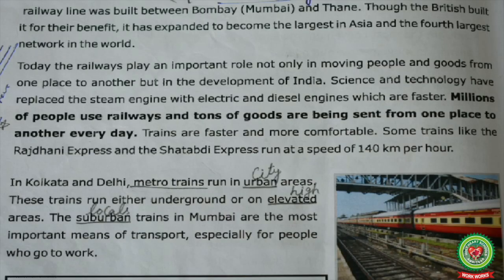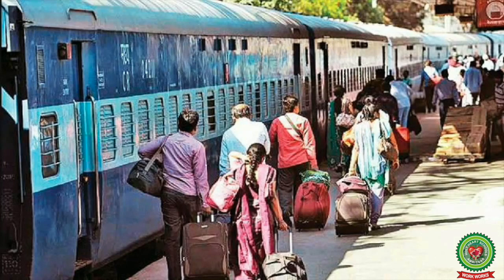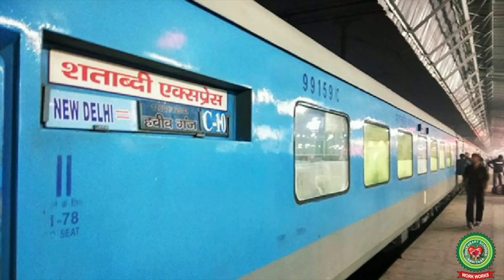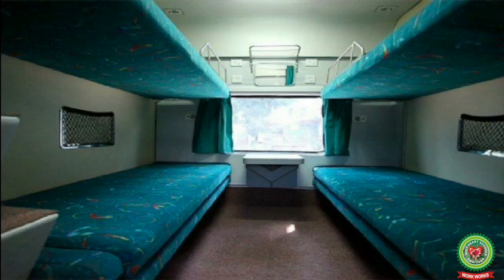Millions of people use railways and tons of goods are sent from one place to another every day. Trains are faster and more comfortable. Some trains like the Rajdhani Express and the Shatabdi Express run at a very high speed of 140 km per hour. Trains are also more comfortable than road transport because they are least affected by weather problems like rain and fog, and all the carriages are air-conditioned with comfortable seats.